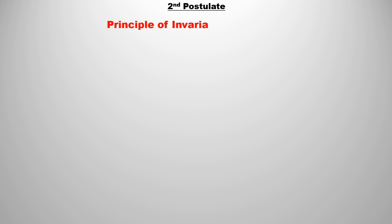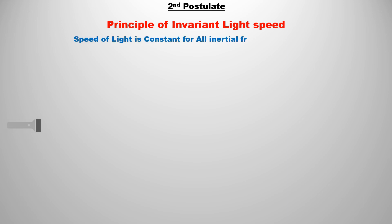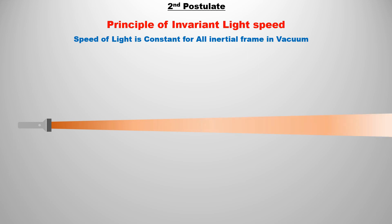The second postulate of Special Theory of Relativity is the Principle of Invariant Light Speed, which defines the speed of light. According to this, in an inertial frame, the speed of light is the same for all observers in vacuum — 300,000 km per second. This postulate is mind-boggling.